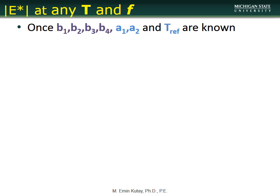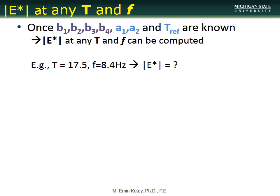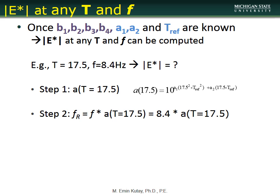Once we have constants B1, B2, B3, B4 — which are the constants of the sigmoidal equation — and A1, A2, which are the constants of the polynomial fit to the shift factor A(T), we can calculate E-star at any condition. For example, at 21 degrees Celsius you get the shift factor, multiply by the frequency (say 8.4 Hz) to get the reduced frequency, then plug that into the sigmoidal E-star equation.